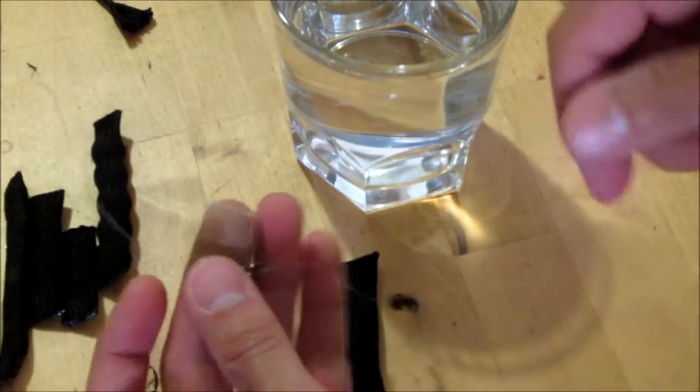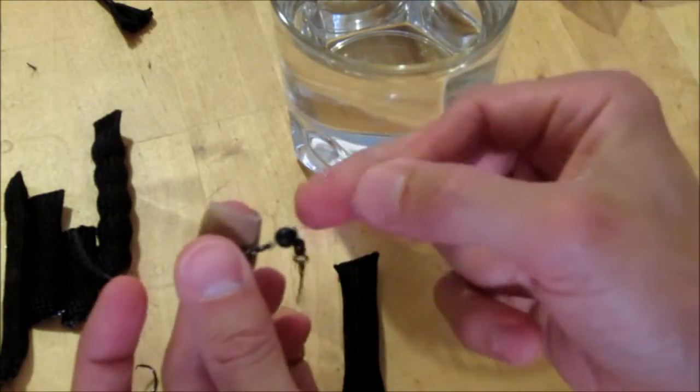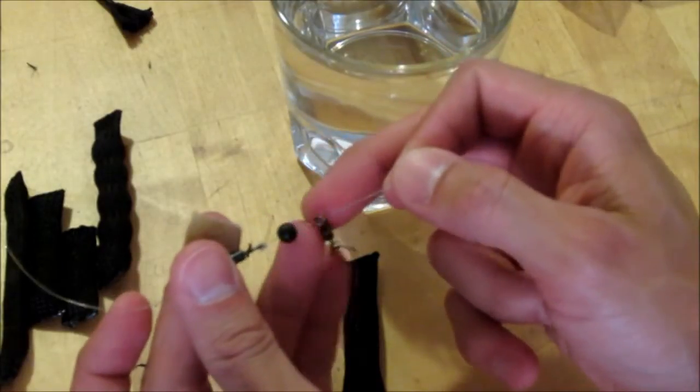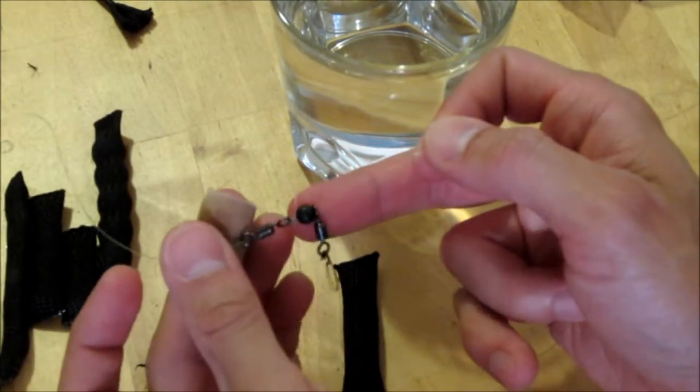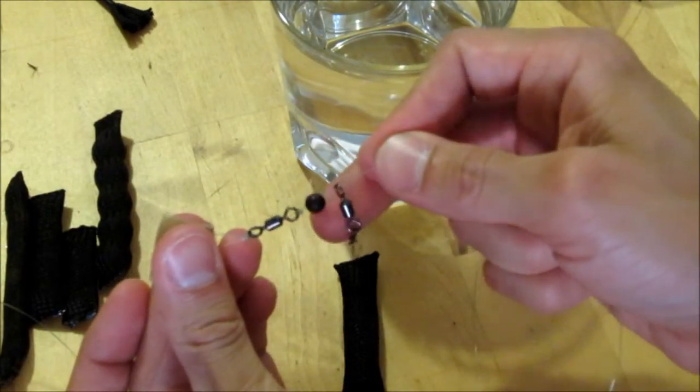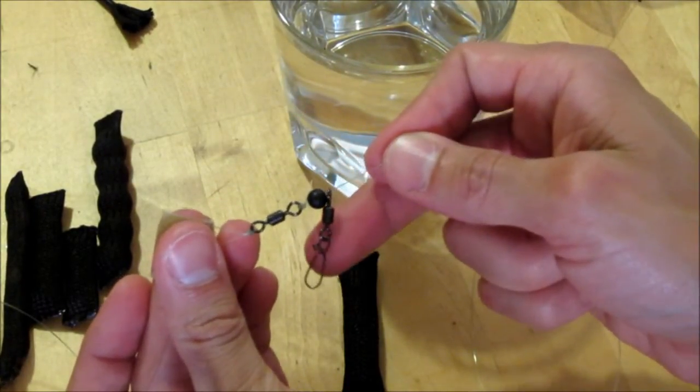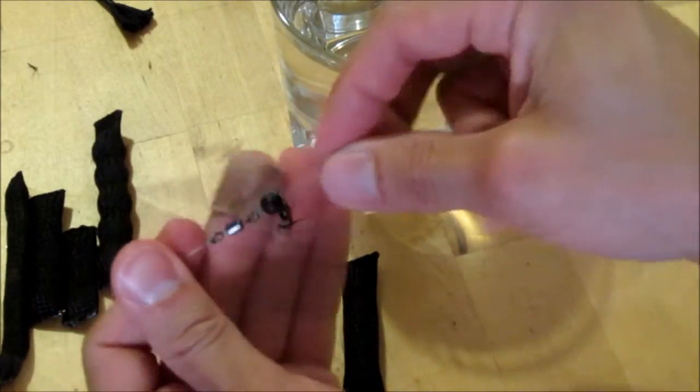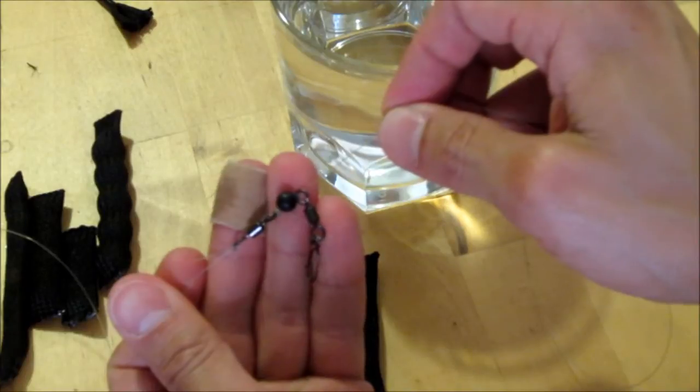But before you tie that on, you want to add on a little plastic bead. This is optional but it does make this a little nicer. Because after that we put on a standard snap swivel, and the bead just prevents these two swivels from getting tangled up. It's not necessary but I find it helpful.